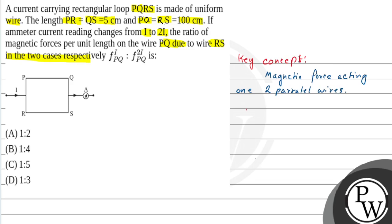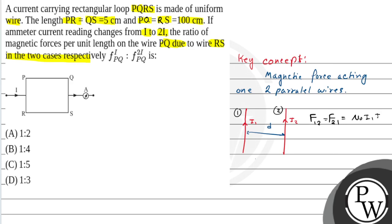Let's say we have two wires carrying currents I1 and I2, and the distance between them is D. This is wire 1 and this is wire 2. The force on wire 1 due to wire 2, which equals the force on wire 2 due to wire 1, is given by μ₀I₁I₂ / 2πD.